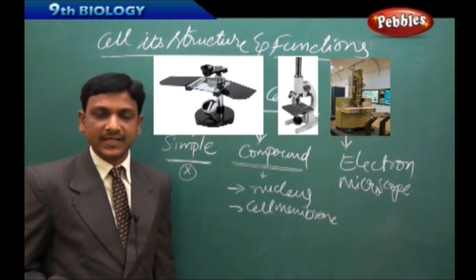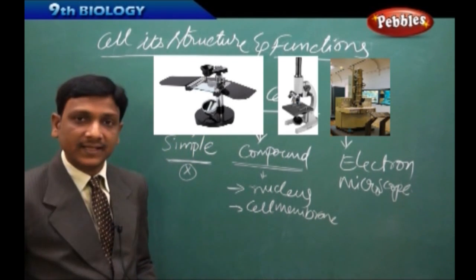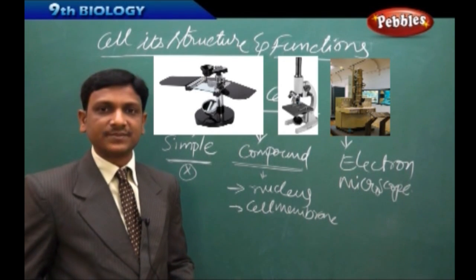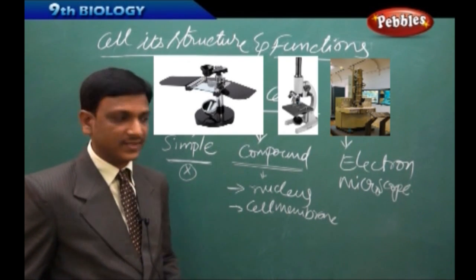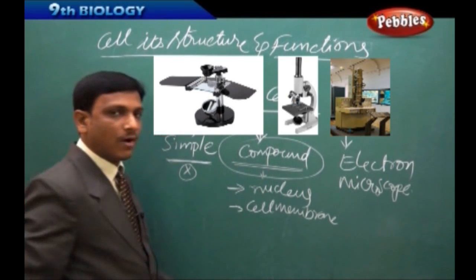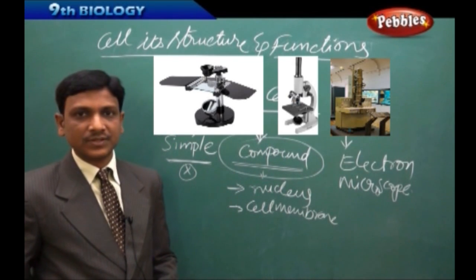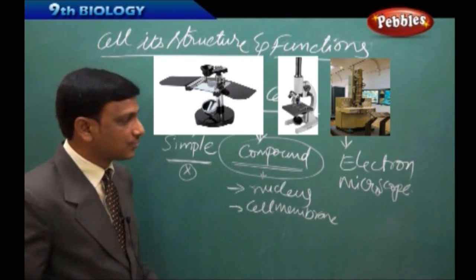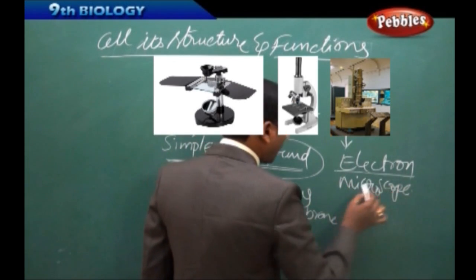But if you wanted to study all the other parts like mitochondria, Golgi apparatus, endoplasmic reticulum, so on, it is not possible by using a compound microscope. So then, the scientists need more powerful microscope which is called as electron microscope.